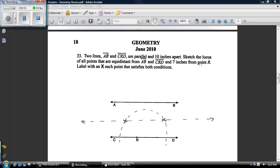And then 7 units, 7 inches from point R, that's going to be a circle around point R with a radius of 7. This line was 5 away from both of these and the radius of this circle here is 7. So it's going to cross over in two places.